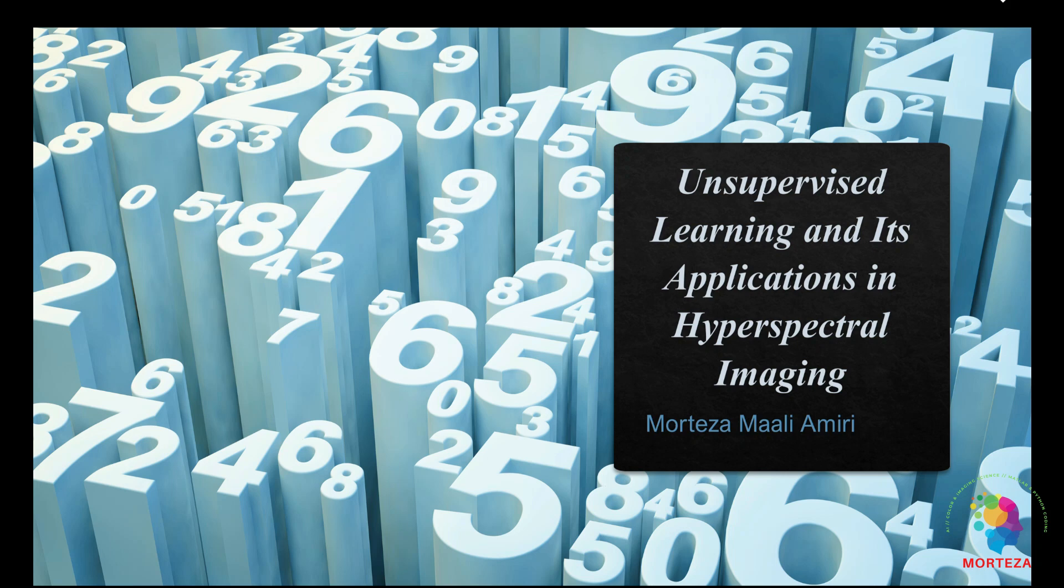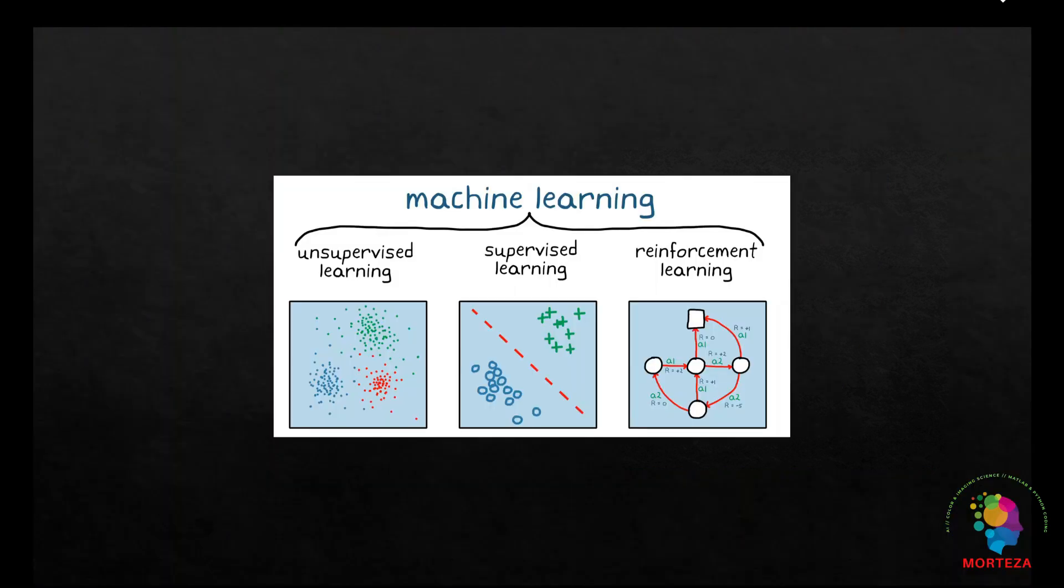Machine learning is a broad field that encompasses various techniques and approaches to enable computers to learn from data. It can be categorized into three main types: supervised learning, unsupervised learning, and reinforcement learning. Supervised learning is the most common form of machine learning. It involves training models on labeled datasets where the input data has corresponding outputs. This approach is used in applications like classification and regression.